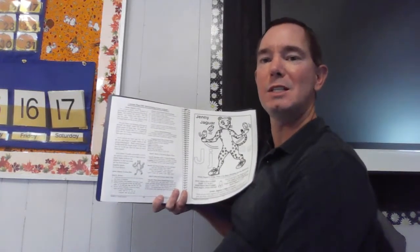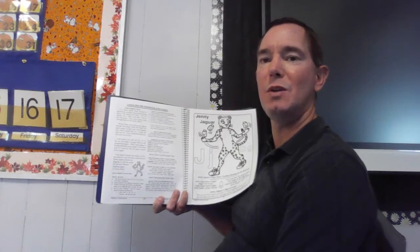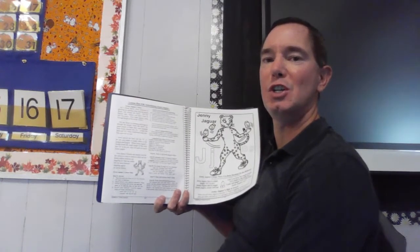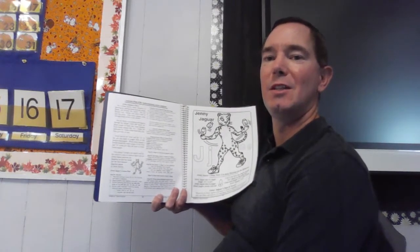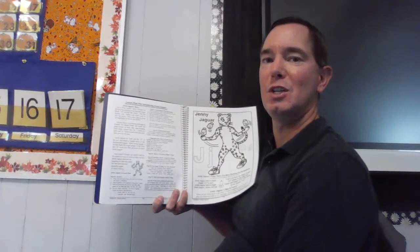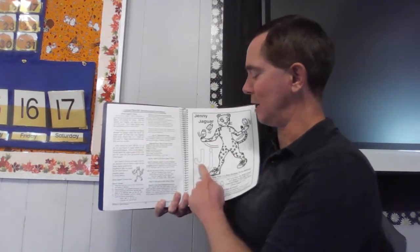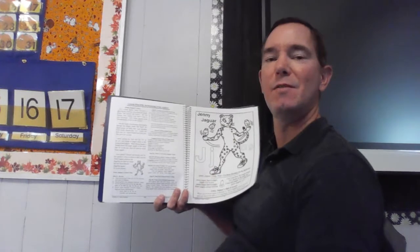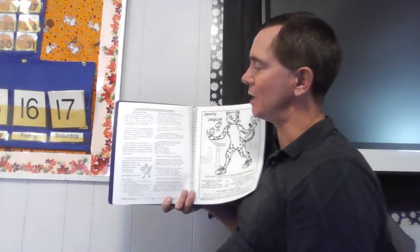While we're listening to Jenny Jaguar's story, I want you to listen for the j-j-j sound. There are a lot of words with the j-j-j sound that begin with the letter J. That's called an alliteration.